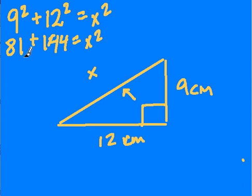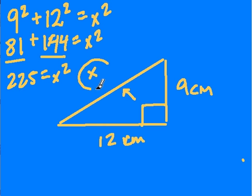Let's add these two numbers up, we get 225, that equals x squared. So x squared though is 225. I don't want to know x squared, I want to know what is x.